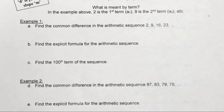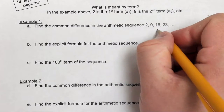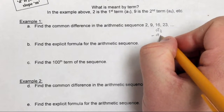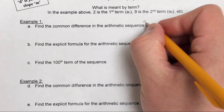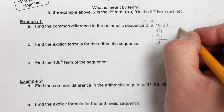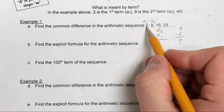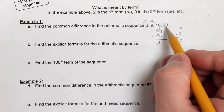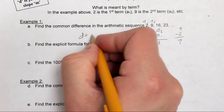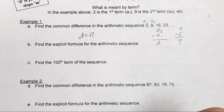Find the common difference in the arithmetic sequence of 2, 9, 16, and 23. To find the difference, you take the second term and subtract the first term. So 9 minus 2 gives a common difference of 7. In other words, if I add 7 to 2, I get 9; add 7 to 9, I get 16; add 7 to 16, I get 23. So d equals 7, or adding 7.